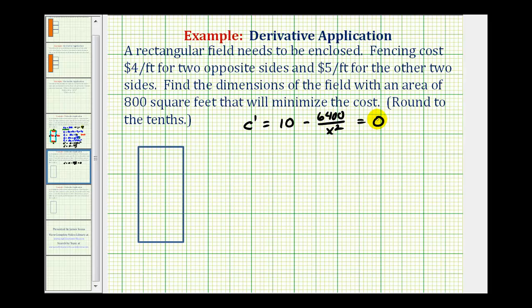If we set this equal to zero, let's add this fraction to the other side of the equation and write 10 as 10 over one. So we'd have 10 over one equals 6400 divided by x squared. Now that we have two fractions equal to each other, this is a proportion, so we can cross-multiply and solve for x. So 10x squared must equal 6400. Divide both sides by 10, so we have x squared equals 640.